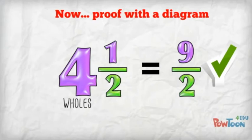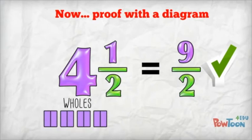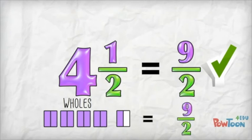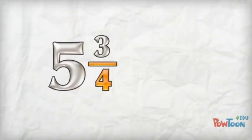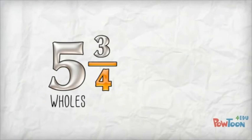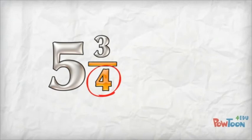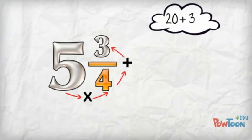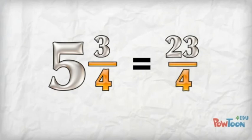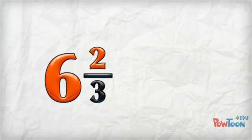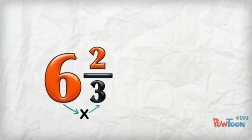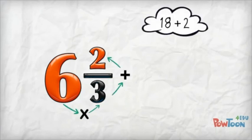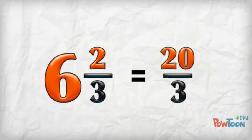I can use a diagram to prove it: four wholes, each worth two parts, plus one more part out of two — that's nine parts out of two. It's the same answer! Five and three quarters: this is five wholes, each whole is worth four parts as the denominator tells us, so five times four is twenty. Add the remaining three — that's twenty-three parts. Put that back over our denominator of four. Done! Six and two thirds: six wholes, each whole is worth three parts, so six times three is eighteen. Add the remaining two — that's twenty parts. Put that back over the denominator of three. Done!